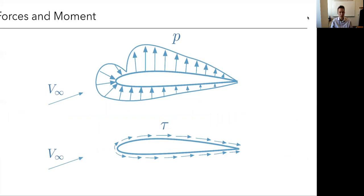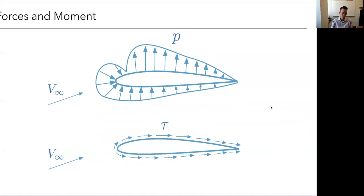As you've learned in fluid mechanics, all the forces and moments on an airfoil — or any body in a fluid — come from two sources: pressure and shear stresses. Those are the only two mechanisms. If we take all the pressure and all the shear stress and integrate around the body, we get resultant forces and moments. There are often significant trade-offs, especially in drag, between pressure and shear stress contributions.